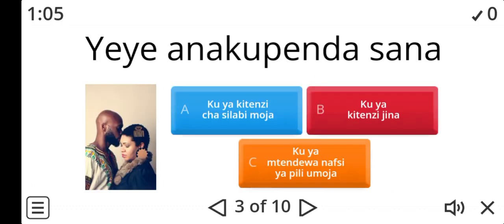Let's look at question three. This ku — what is it representing among A, B, and C? Is it ku ya kitinzi cha silabi moja? Is it ku ya kitinzi jina, or ku ya mtende wa nafsi ya pili umoja?